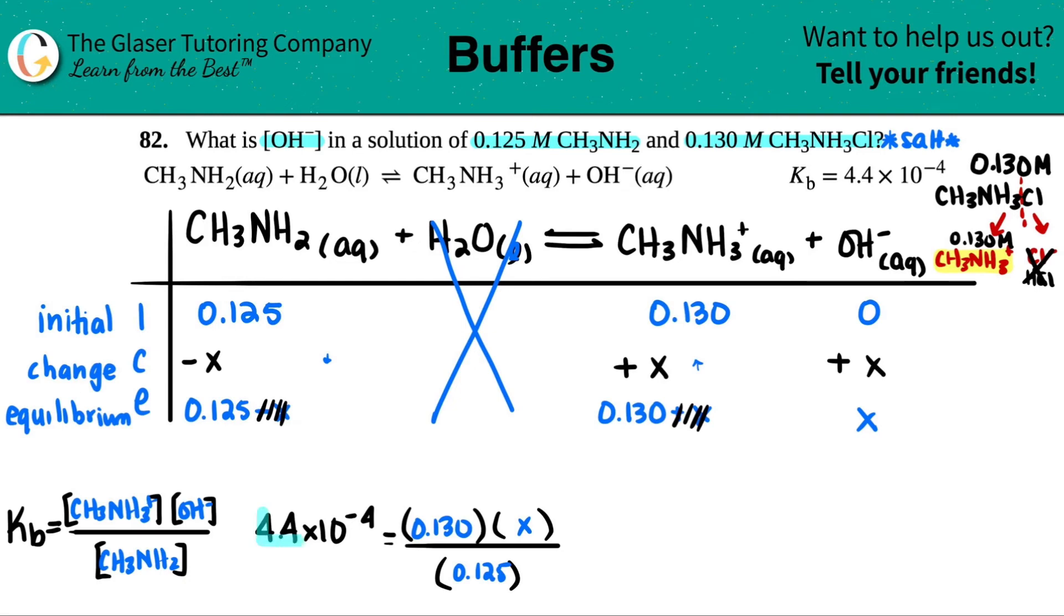Now, just comes the algebra. 4.4 times 10 to the negative fourth times 0.125. I get 5.5 times 10 to the negative fifth equals 0.130x. Want to get x by itself, so divide by 0.130. And now I have x equals this divided by 0.13. And I'm working with three sig figs here. So 4.23 times 10 to the negative fourth molarity.